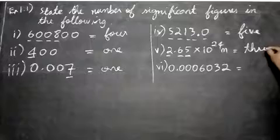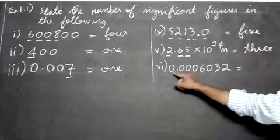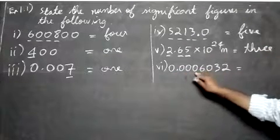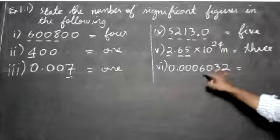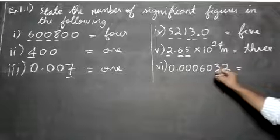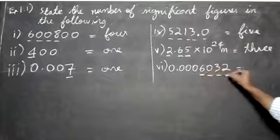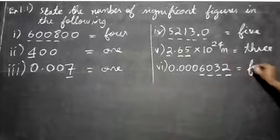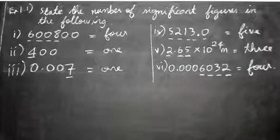Then the next one — the decimal point is there, so one, two, three, four. Some numbers are not significant, but this zero is between two non-zero numbers, six and three, so it is significant. Therefore one, two, three, four — there are four significant digits here. That covers Example 1.1. Thank you for watching.